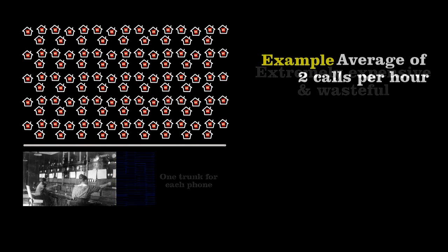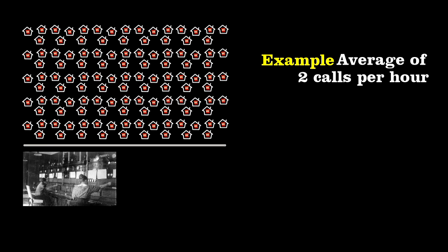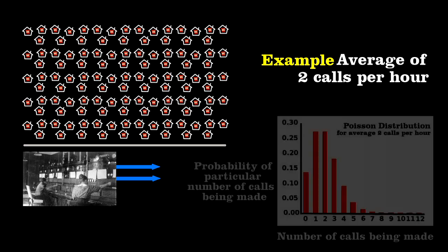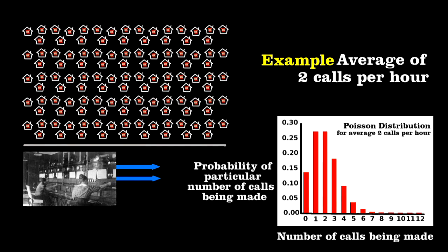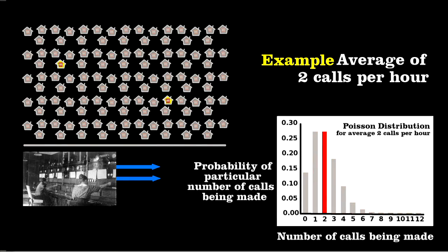To see what Erlang did, let's look at a town where there's an average of two calls an hour. You'd think two trunk lines would do, but Erlang showed that although the average rate is two an hour, the calls will bunch up. A lot of time it will be only two calls, but also sometimes none or three or four or five will occur.